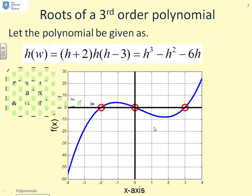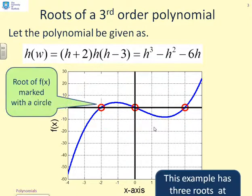So if I underline, you can see there's a factor h+2, which gives you a root at -2. There's a factor h, which gives you a root at 0, and a factor h-3, which gives you a root at 3.